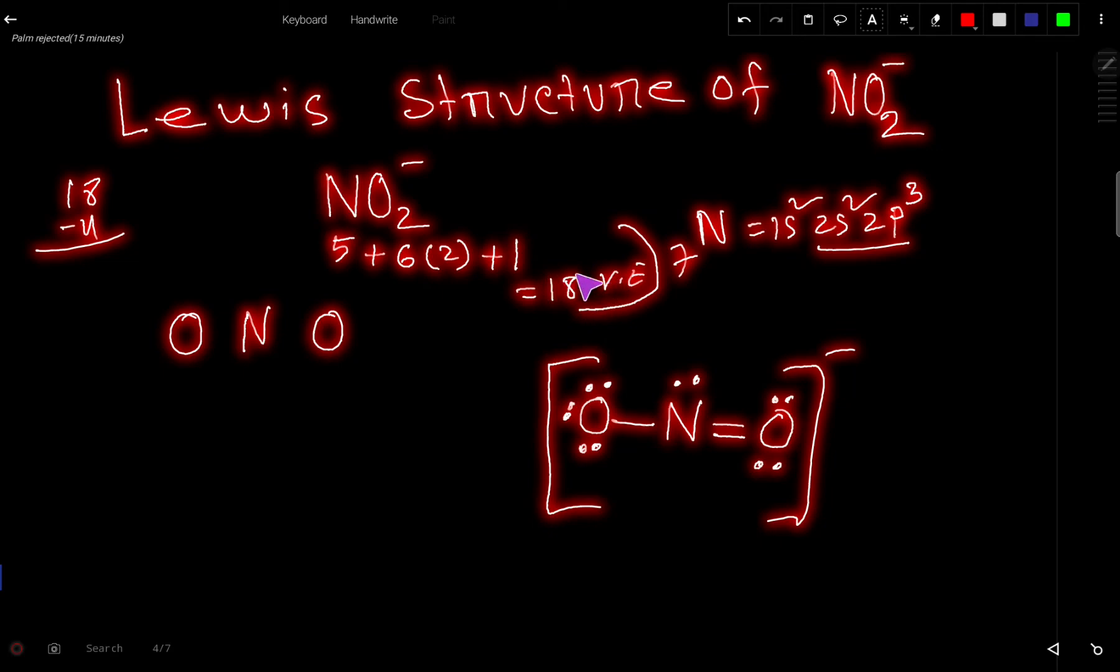These 18 valence electrons have 2 tasks. The first task is to connect these 3 atoms together, and the second task is to satisfy the octet for all atoms. In the valence shell of nitrogen, there is no empty orbital, so nitrogen doesn't break the octet rule. The central atom is nitrogen because it has the highest capacity for making bonds, or it is the least electronegative atom.